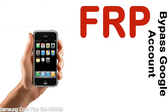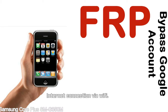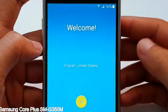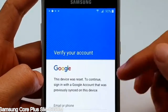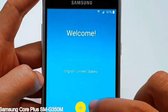Before starting: 1. Make sure that your device is well charged. Ideally, the battery level should be around 60 to 70% — the more the better. 2. Internet connection via WiFi. Here is a step-by-step guide on how to bypass Google account on your Samsung Galaxy device.